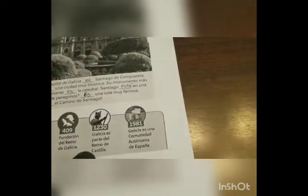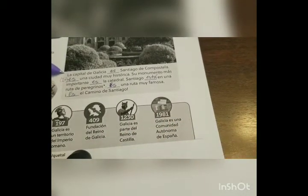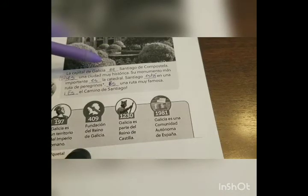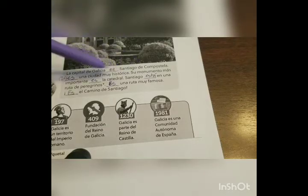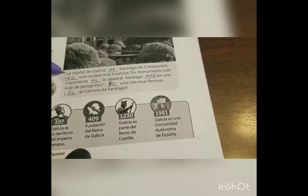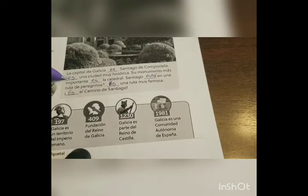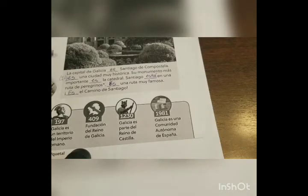This first section says 'la capital' — the capital. 'La capital de Galacia es Santiago de Compostela' — the capital of Galicia is Santiago de Compostela. You'll notice that in the second sentence we don't actually see the subject of the sentence. This is because in Spanish, if we have already established the subject in a previous sentence we don't need to re-establish it — it's more of an implied 'it.' So instead of starting with 'is una ciudad,' we have an implied 'it' — it is una ciudad muy histórica, it is a very historical city.